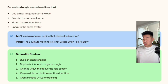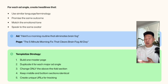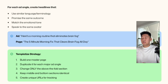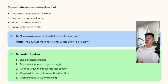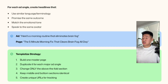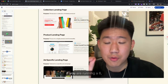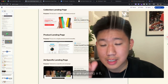Once you have one main master templatized page, duplicate it for all your different angles and messaging. The only thing you'll really focus on testing and changing is the above-the-fold section — typically your headline, sub-headline, call-to-action button, and main hero visual. Everything else on the page stays the same, so you're only testing the top section to find winning headlines and messaging.